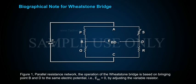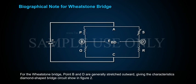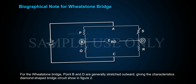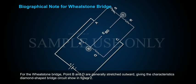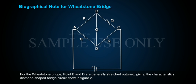The operation of the Wheatstone Bridge is based on bringing point B and D to the same electric potential — that is, EBD equals 0 — by adjusting the variable resistor. For the Wheatstone Bridge, points B and D are generally stretched outward, giving the characteristic diamond-shaped bridge circuit shown in Figure 2.